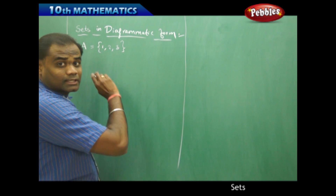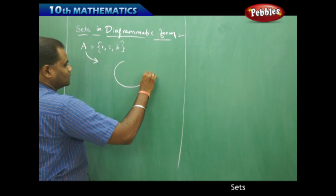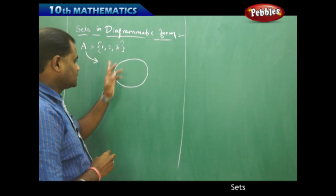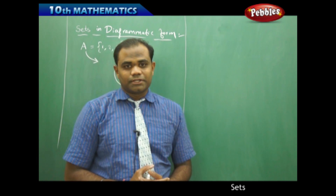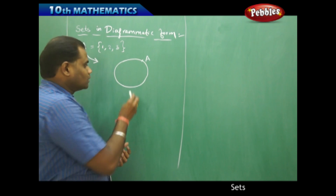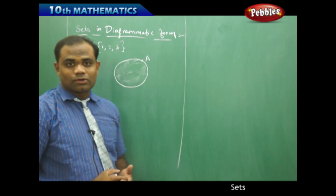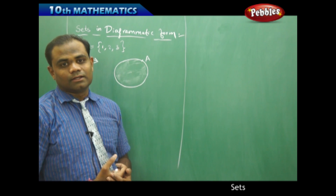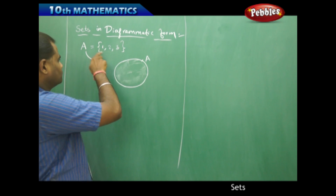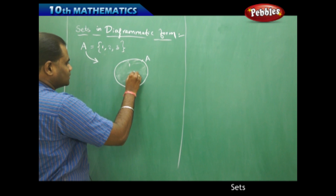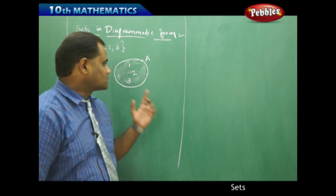Generally, a set is denoted with a circle. In the diagrammatic form I denote set A with a circle — not exactly a perfect circle but a random closed curve — and then label it with the set name A. In this diagrammatic representation, I assume the set to be in circular form and all the elements lie inside this region. No element crosses out the circumference of the circle. So the elements 1, 2, 3 for set A will lie inside the circle and do not cross the circumference.